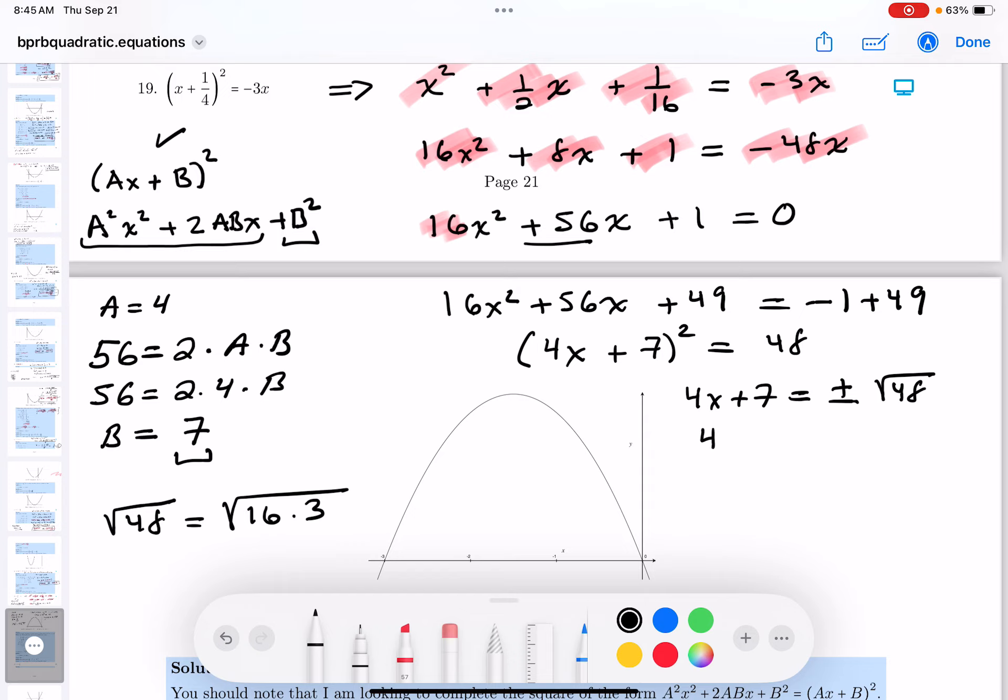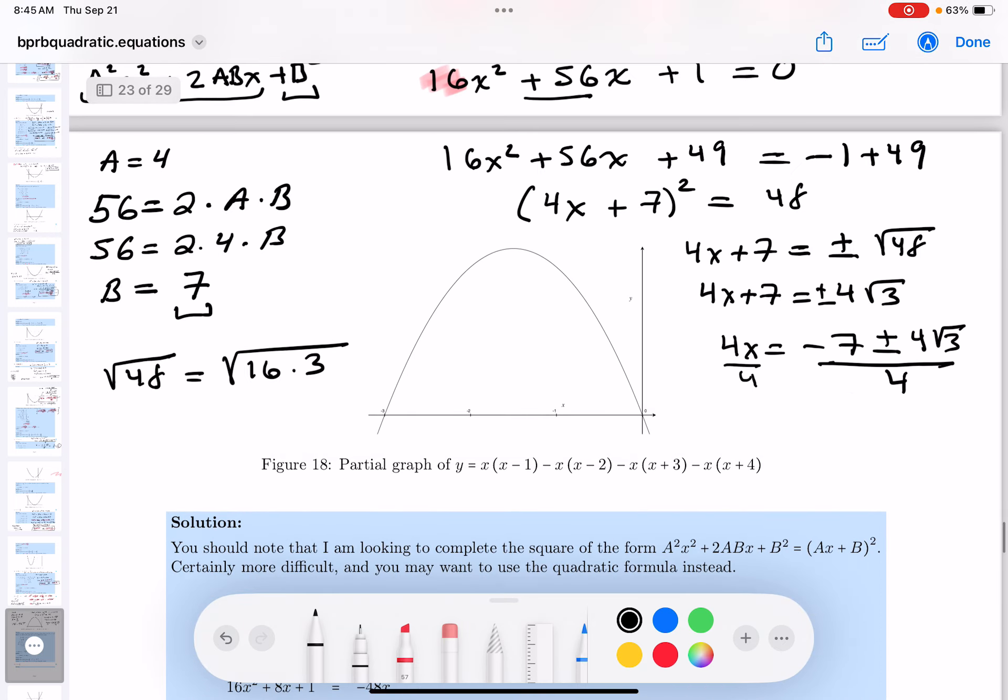I'm going to write this over here for you. 4x plus 7 equals plus or minus 4 root 3. What do you get over here? Take 7 from both sides. You get minus 7 plus or minus 4 root 3. And then what are you going to do? Divide both sides by 4. You're going to get x equals minus 7 plus or minus 4 root 3 over 4. I'm going to say this is an answer. The answer I would write down.